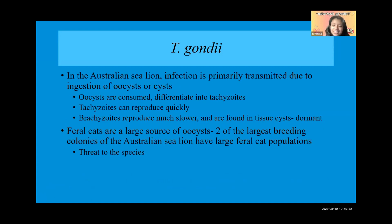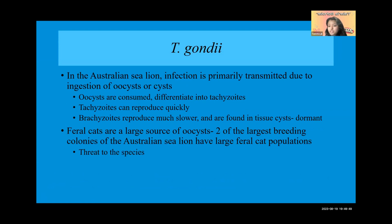In the Australian sea lion, infection is primarily transmitted through the ingestion of oocysts or tissue cysts. Oocysts are essentially egg sacs, and when sporulated they are infective. They differentiate into tachyzoites, which reproduce rapidly, and then form bradyzoites, which reproduce much slower. Bradyzoites are present in chronic infections and are found in the hundreds within tissue cysts.